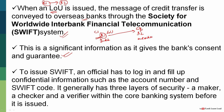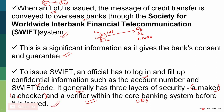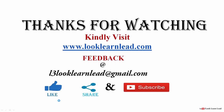To issue a SWIFT message, an official has to log in and fill in confidential information such as the account number and the SWIFT code. Generally, the SWIFT system has three layers of security within the Core Banking System before it is issued: a maker, a checker, and a verifier. This is how the SWIFT system works. If you liked this video, please subscribe to our channel and visit our website at www.looklearnly.com.